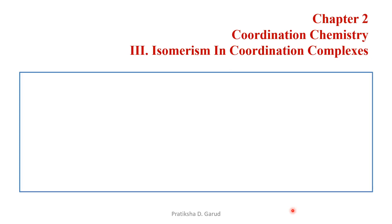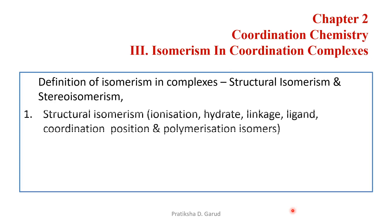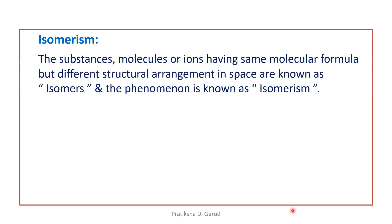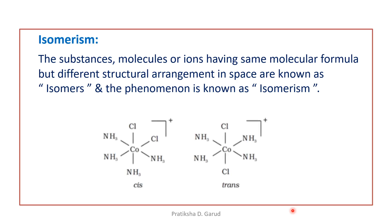In isomerism in coordination complexes, we have to study these sub-points. So what is the definition of isomerism? The substances, molecules, or ions which have the same molecular formula but different structural arrangement in space are known as isomers, and the phenomenon is known as isomerism. We can see that two isomers have the same molecular formula, but the arrangement of different groups or atoms is different — that's why they are called isomers.